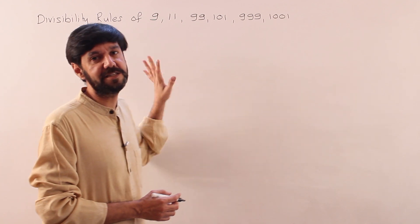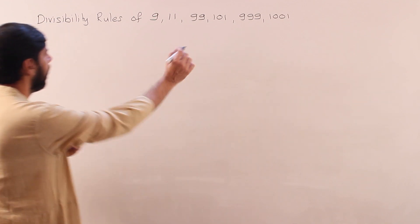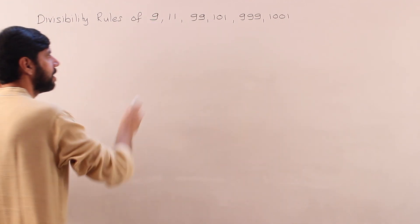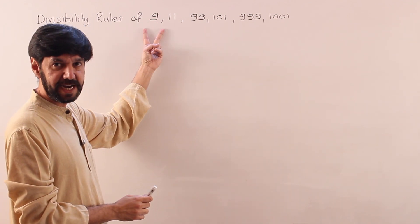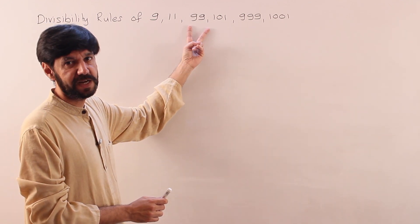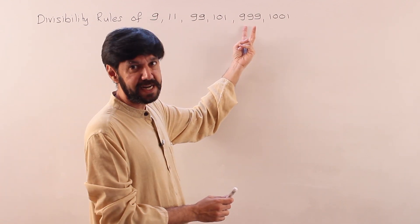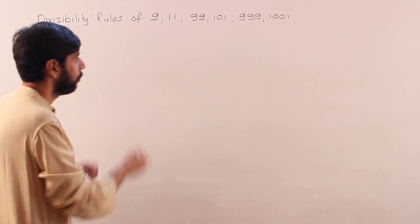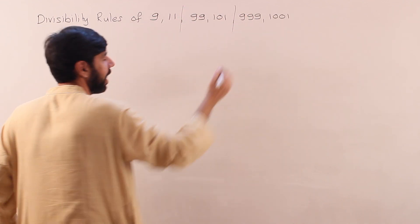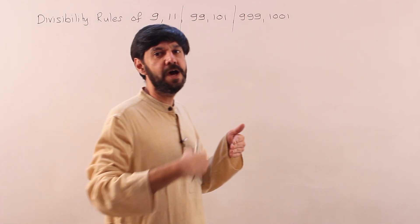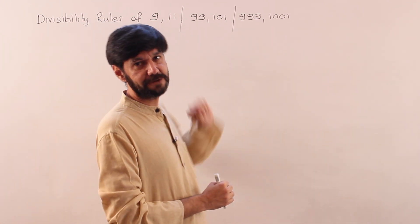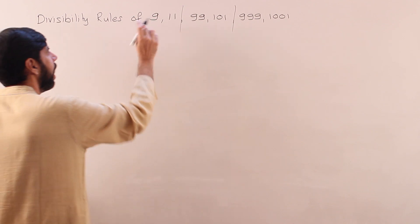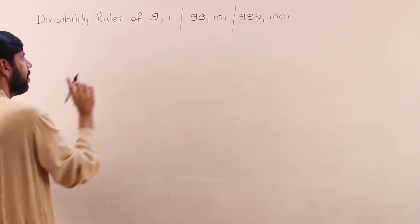This is not the rigorous theoretical proof; it is only good enough for casual usage. I'm pretty sure you know the divisibility rule of 9 and 11. See the pattern — I'm checking the rules of 9 and 11, of 99 and 101, of 999 and 1001. I hope you can see that pattern: they all are one less than or one more than a power of 10 — 10, 100, 1000.